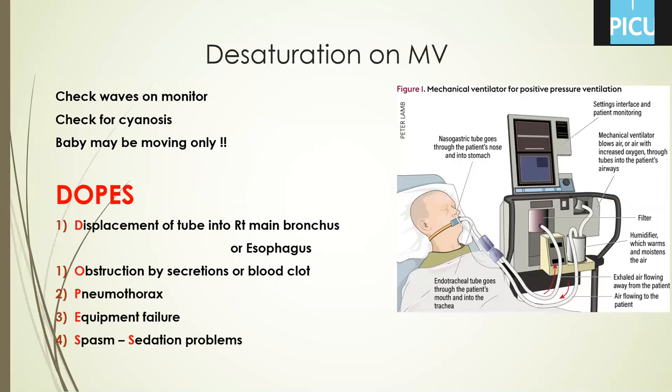Sometimes the tube may be displaced into the right main bronchus — you will find good air entry on the right side and diminished air entry on the left. Check fixation of the ETT; usually after intubation, the nurse writes the ETT fixed at, for example, 10 cm. If it is now at 13 or 14, it may have been pushed in during care. During AMBU bagging, if you find absence of chest rise, no breath sounds, and abdominal distension, the tube may be displaced into the esophagus — remove it and do bag-and-mask ventilation while preparing for re-intubation.